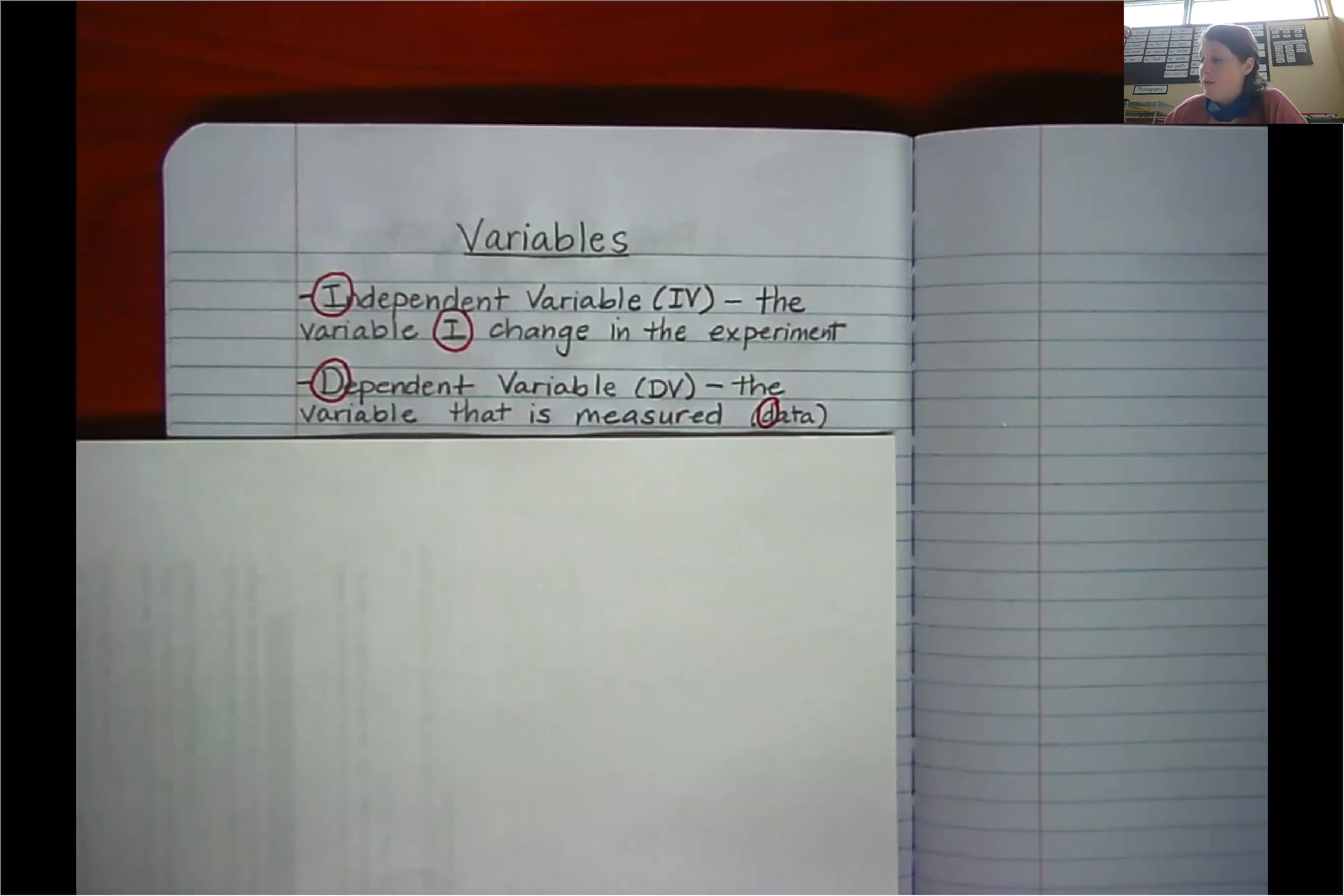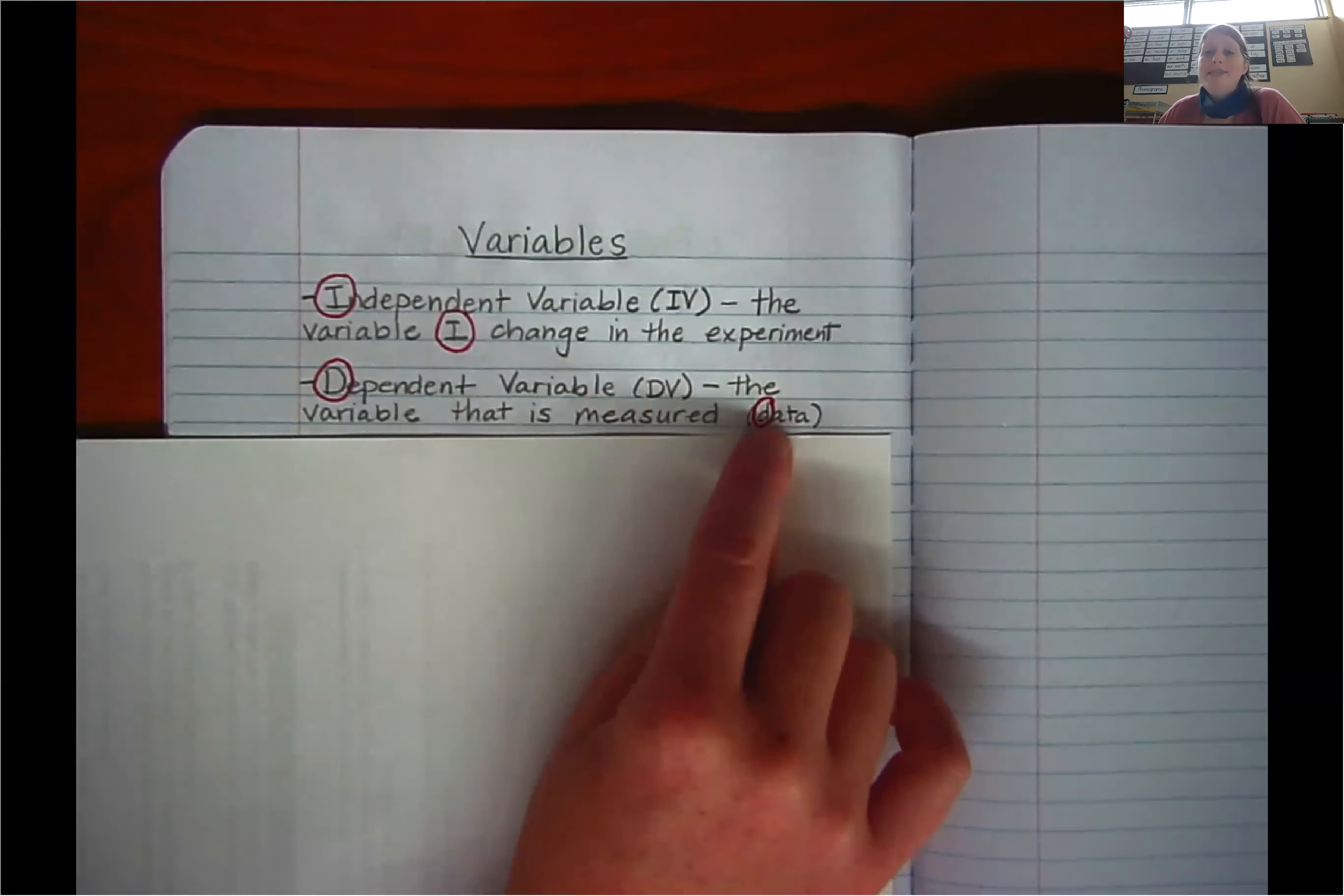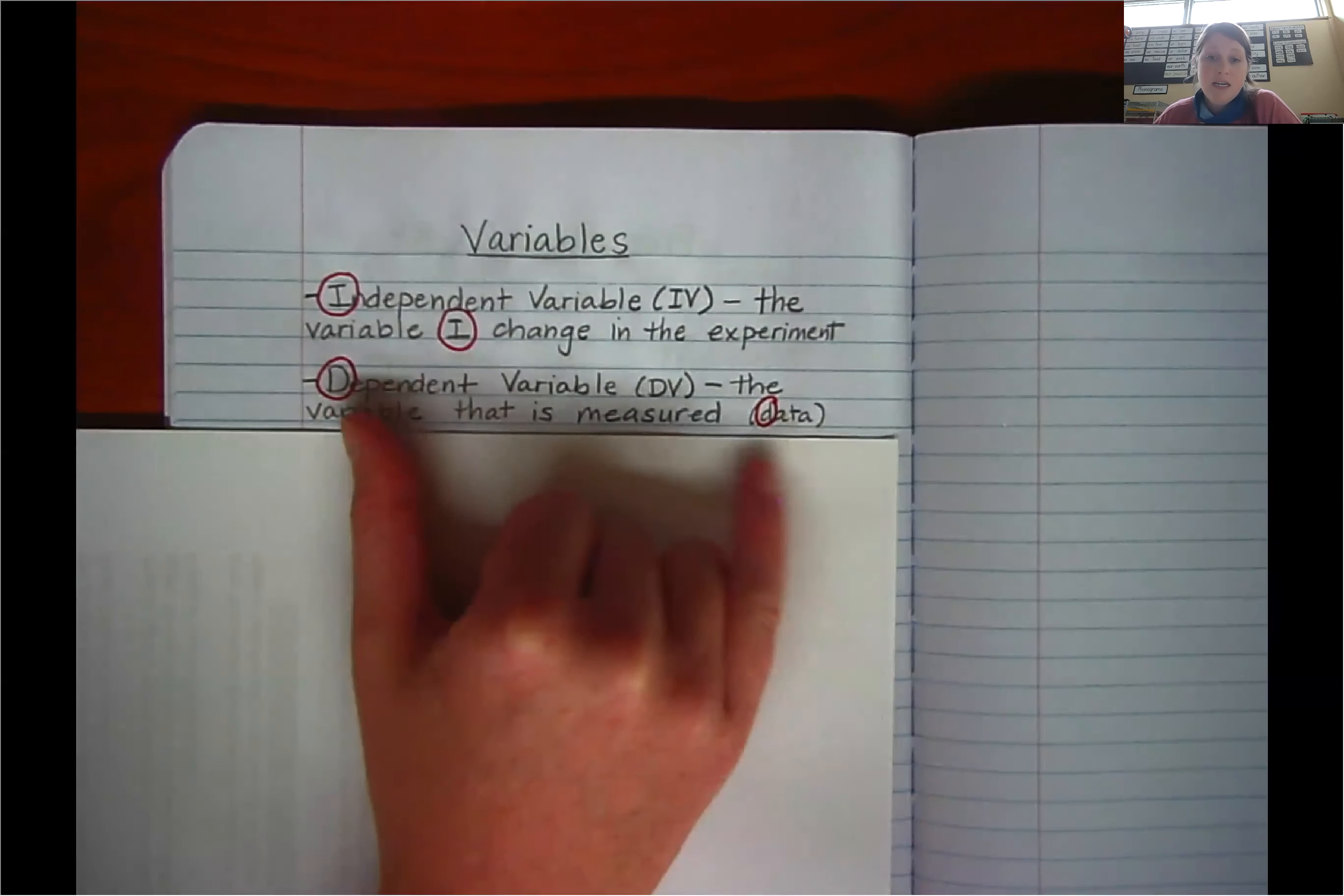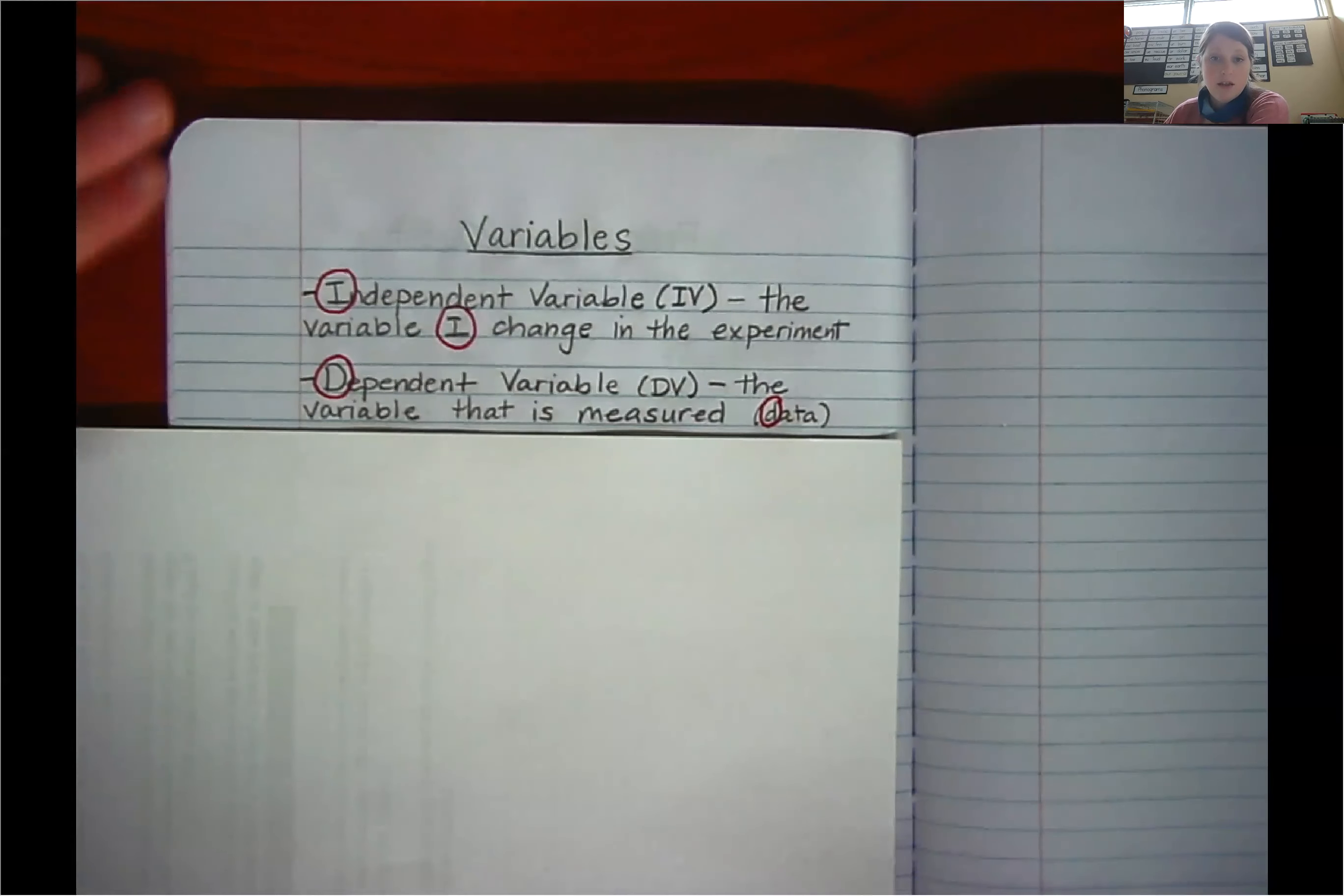The dependent variable, also known as the DV, is the variable that is measured. It is what gives us our data. And so this is why I circled the D here and the D here. It's because that's how I'm remembering D for data. Take as much time as you need to finish copying that. If you need to pause the video before moving on, that is fine.